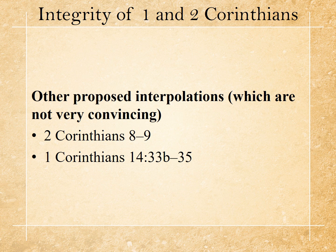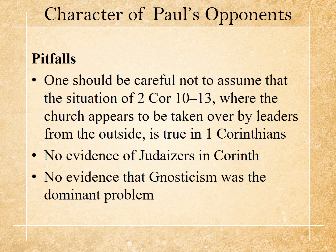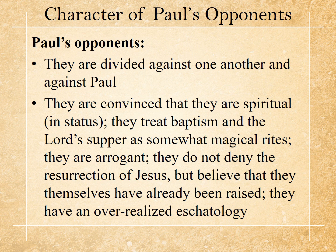Other proposed interpolations — insertions — such as 2 Corinthians chapters 8 and 9, and 1 Corinthians 14:33 to 35, are not very convincing. A pitfall to avoid: one should not assume that the situation of 2 Corinthians 10 to 13, where the church appears taken over by outside leaders, is also the setting in 1 Corinthians. There is no evidence of Judaizers in Corinth, and no evidence that Gnosticism was the dominant problem. Rather, they are divided against one another and against Paul — that seems to be the core opposition in this setting.